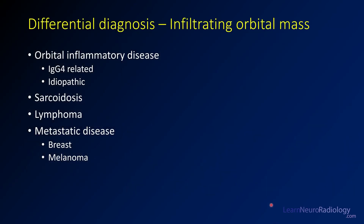When you see this kind of infiltrating orbital mass, you need a differential. Orbital inflammatory disease is the top consideration — previously called pseudotumor, then idiopathic orbital inflammation (IOI), and increasingly linked to IgG4-related pathology. You can divide it into IgG4-related or idiopathic categories. Other considerations include sarcoidosis, lymphoma, and metastatic disease — particularly breast cancer or melanoma.